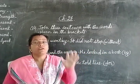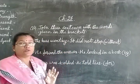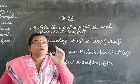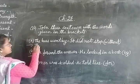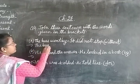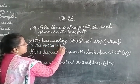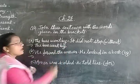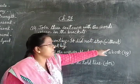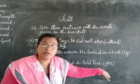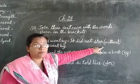Dear children, we will write the first sentence. In all the answers we will write the first sentence first. Let us write: 'The bus went by.' After that, instead of the second part, we use the word from the bracket.